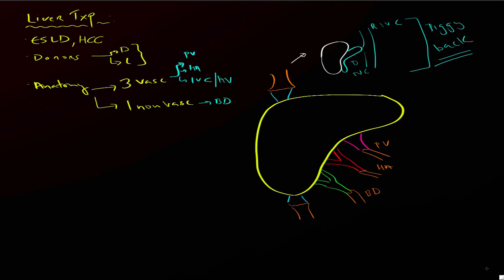Before we finish on anatomy, it's important to remember that sometimes there may be a mismatch at the anastomosis. The donor's liver with its respective vessels and bile ducts may be larger or smaller than the recipient's — this is particularly an issue with pediatric patients. You may see a mismatch particularly with the biliary tree and the portal vein, and that's acceptable as long as it's not causing hemodynamic compromise or frank biliary obstruction.